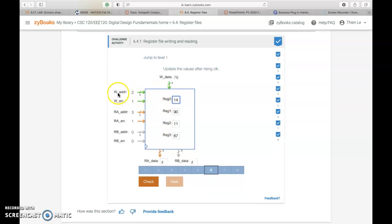We have the W N enabled and the RA N enabled. So we are looking for W N, looking for changes in register 2 by using the data of 78. So basically we just change register 2 from 11 to 78. And now we're looking at RA N and we look at register 3 for that, which is 67. So we simply write that.